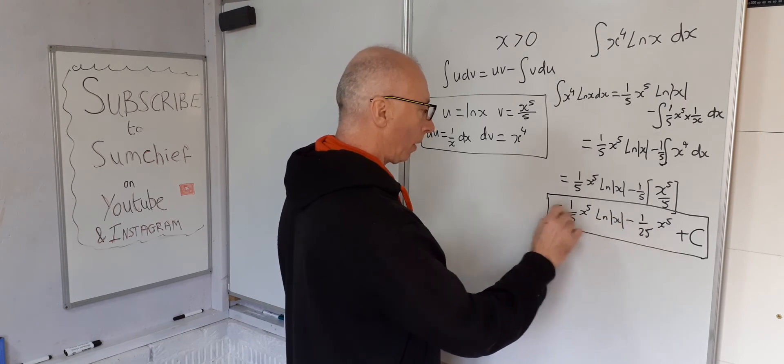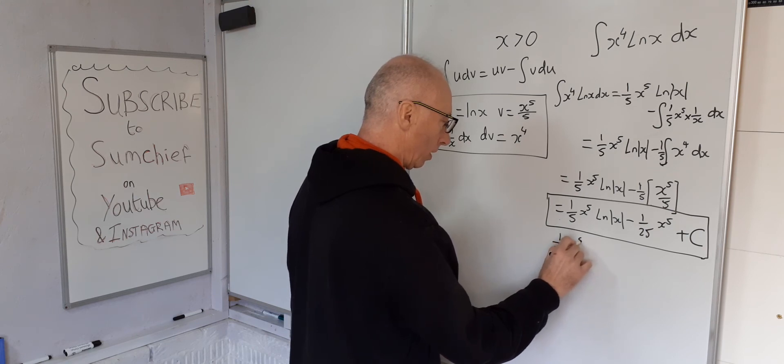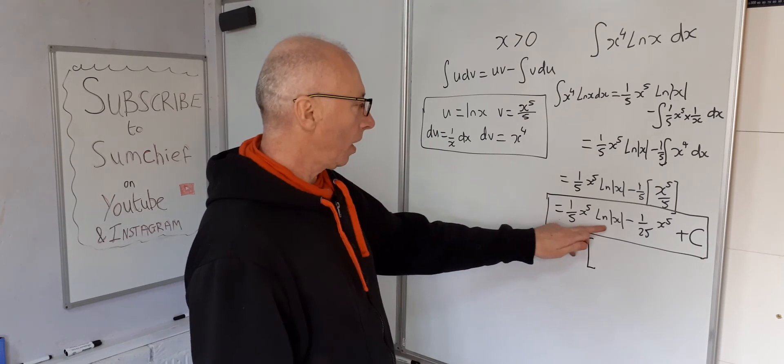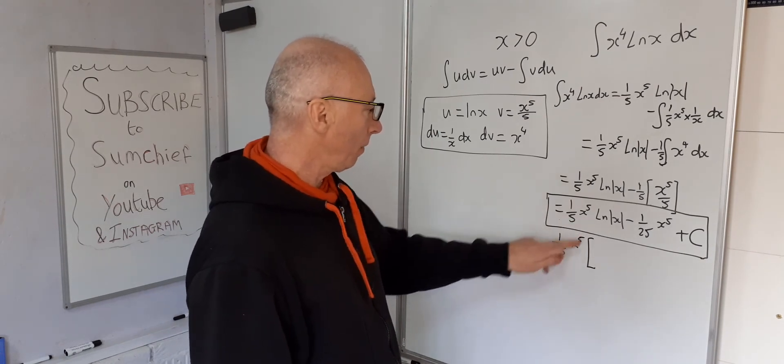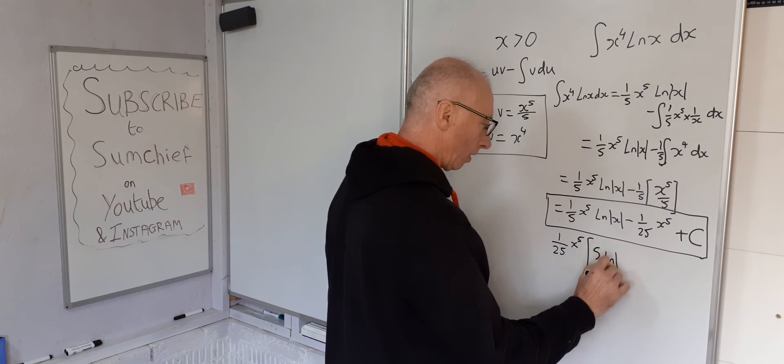And 1 over 25 could be a factor of all the terms. So 1 over 25 x to the 5 times 5 ln x. So if you multiply that by 5, we get 1 over 5 again. So 5 ln of x.